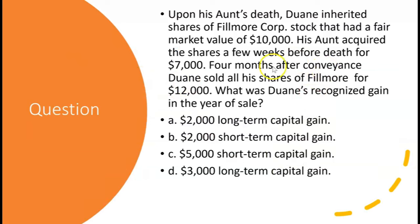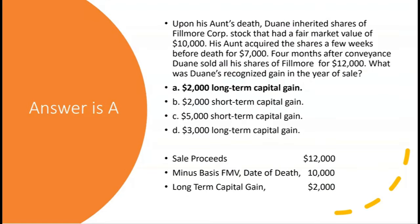Let's try this: upon his aunt's death, Dwayne inherited shares of Fillmore Corp stock that had a fair value of $10,000 on the date of his aunt's death. His aunt acquired the shares a few weeks before death for $7,000 — but we don't care about that. Four months after conveyance, Dwayne sold all his shares of Fillmore for $12,000. We take the proceeds of $12,000 and compare it to Dwayne's stepped-up basis of $10,000 — not the $7,000 the aunt paid — resulting in a $2,000 long-term capital gain.